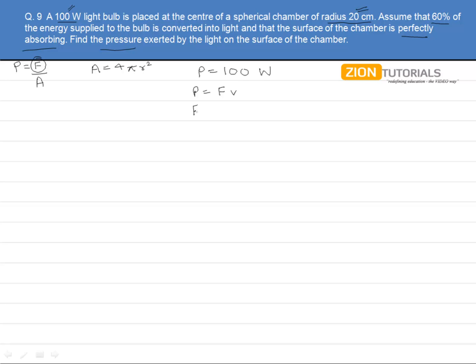So force from this formula comes out to be 100 upon 3×10⁸, but we need 60% of that, which is 100×60/100 upon 3×10⁸. That is 2×10⁻⁷.